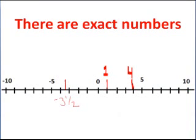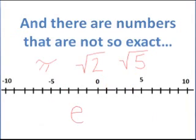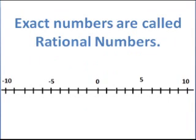We have positive numbers on the number line, and we have negative numbers on the number line. There are exact numbers on the number line, like 1 and 4. There are those numbers that are not so exact, like pi, square root 2, square root 5, and e, and they too fall on the number line.